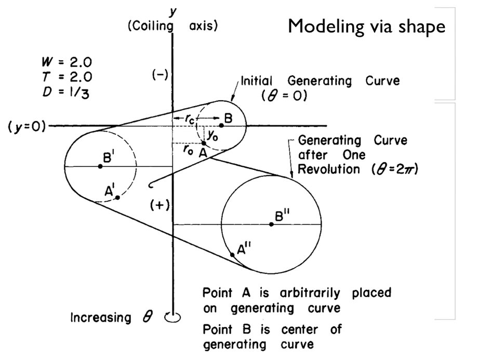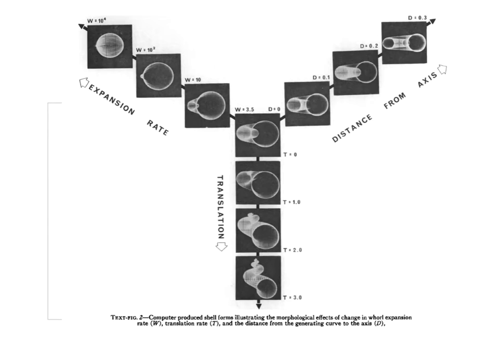What he did is he basically made a model of how a shell coils. And he came up with a number of different variables that described all the different ways in which you could make a shell. And I'll just go over those here.